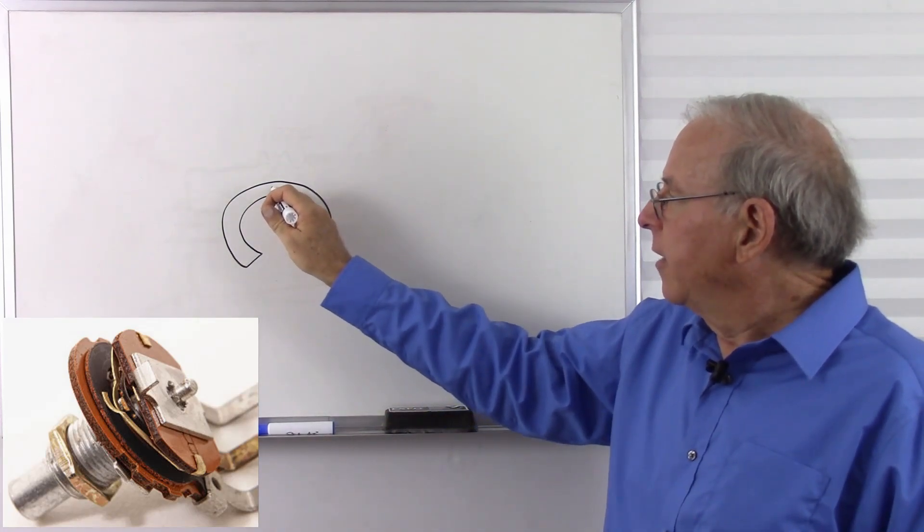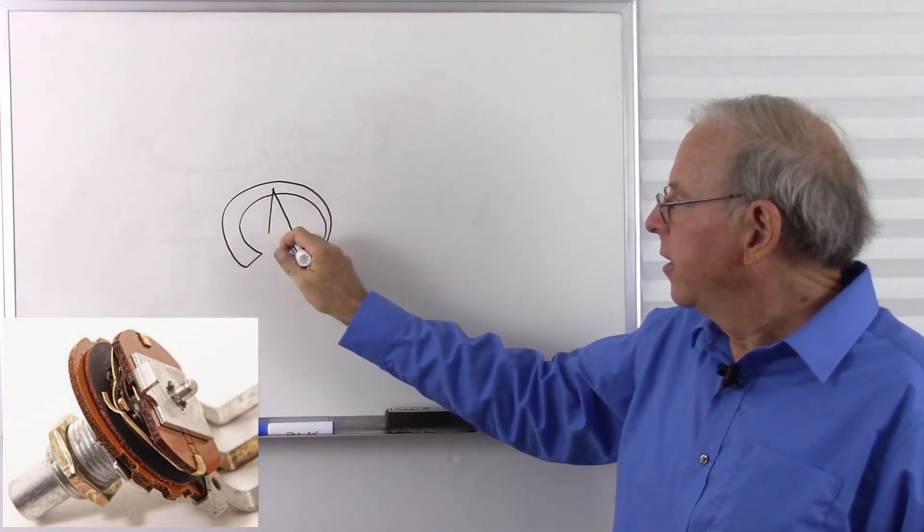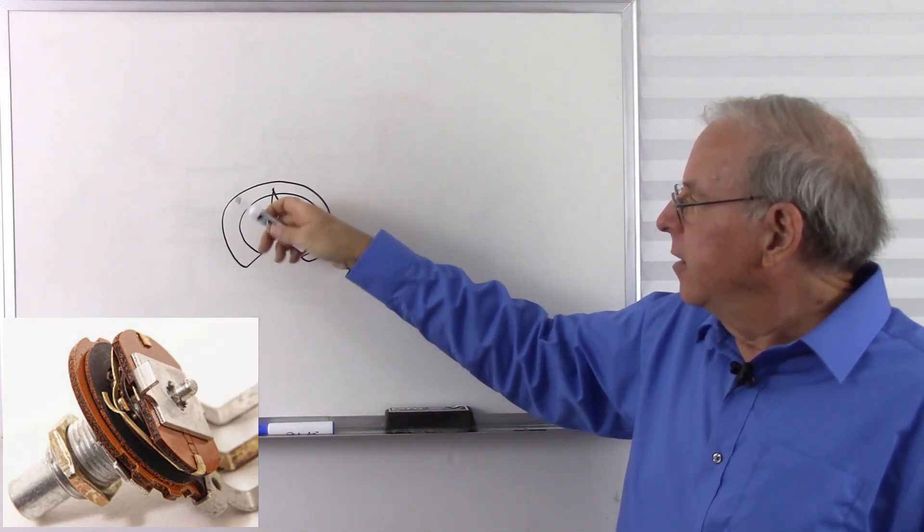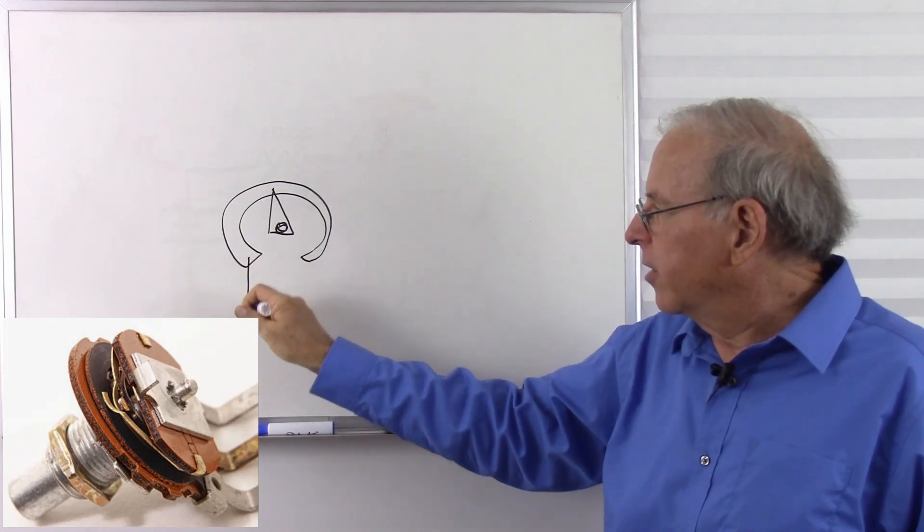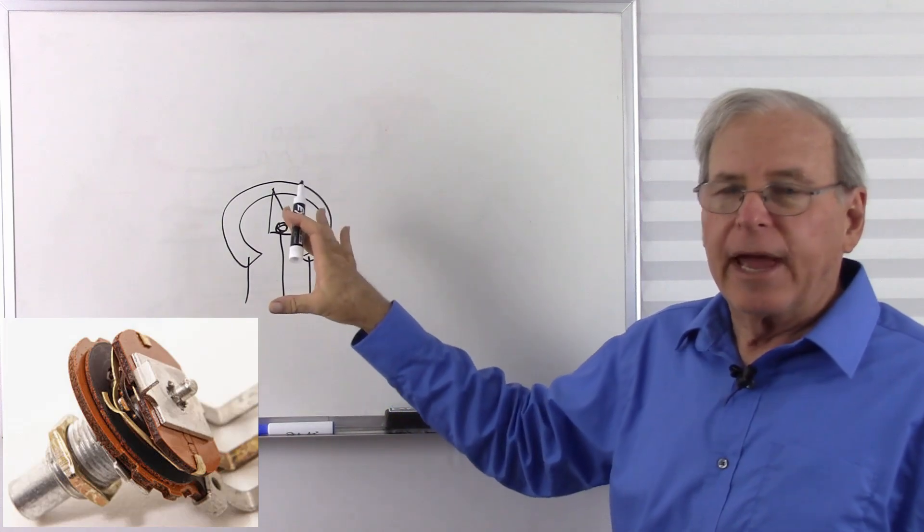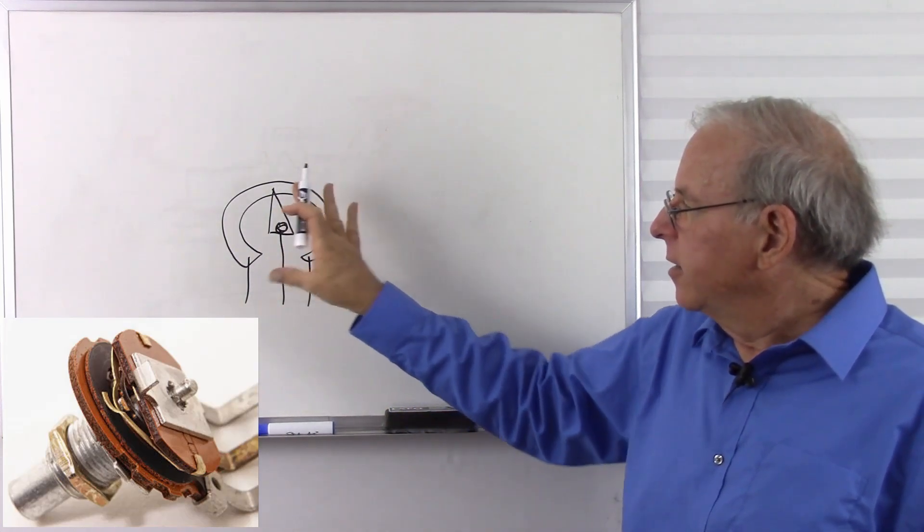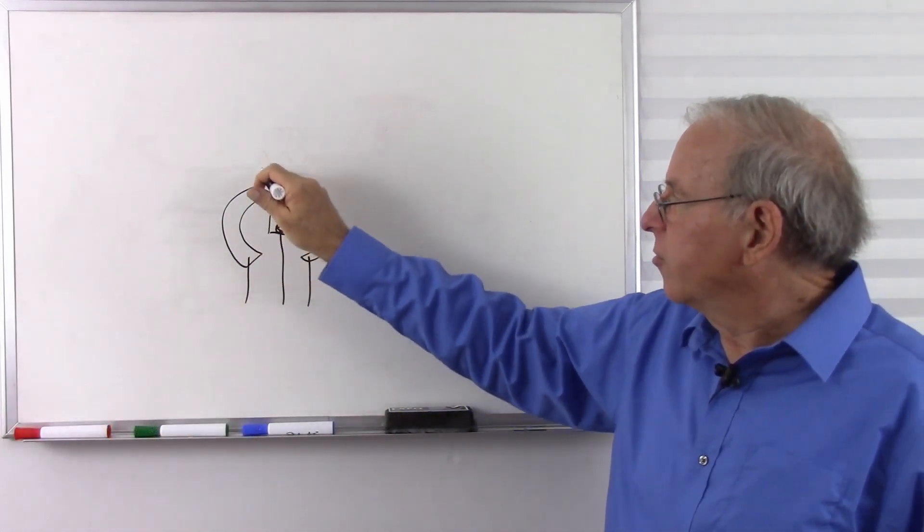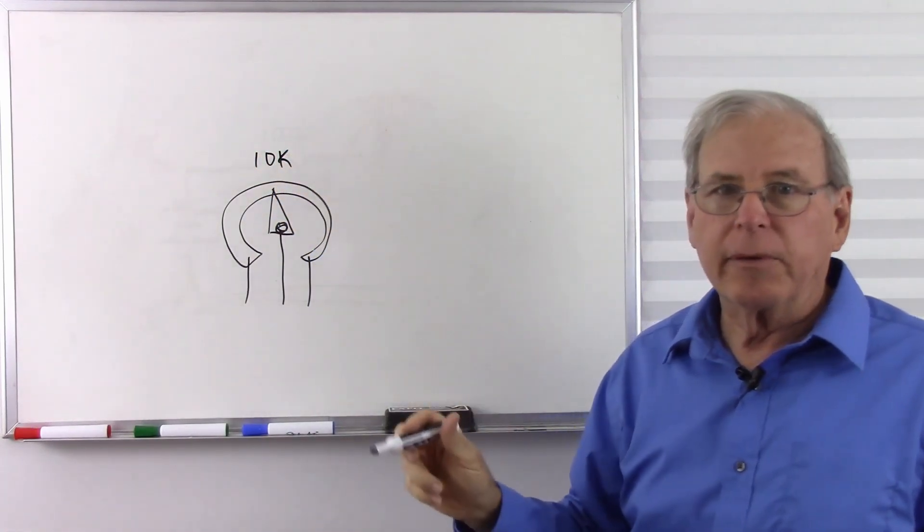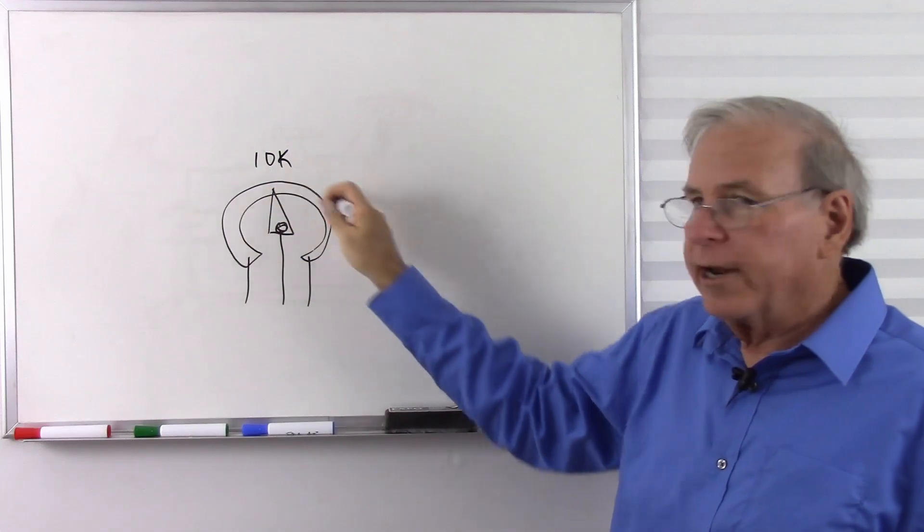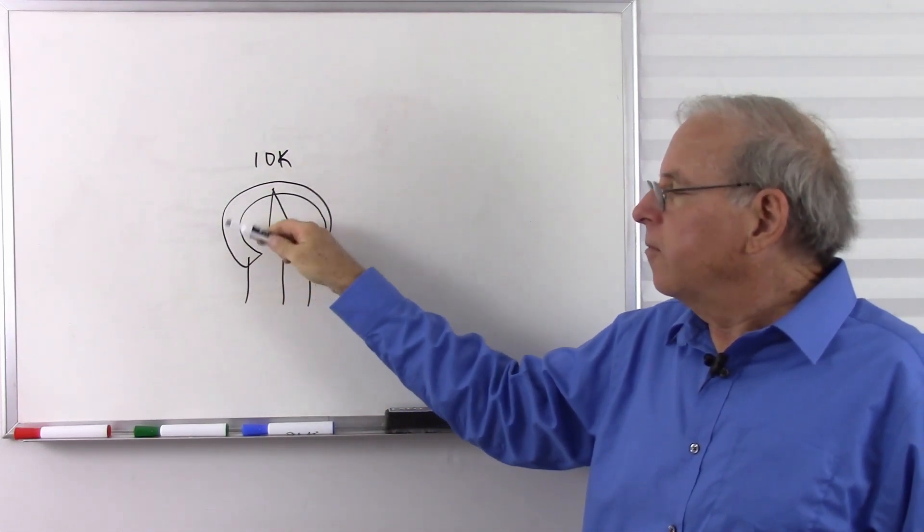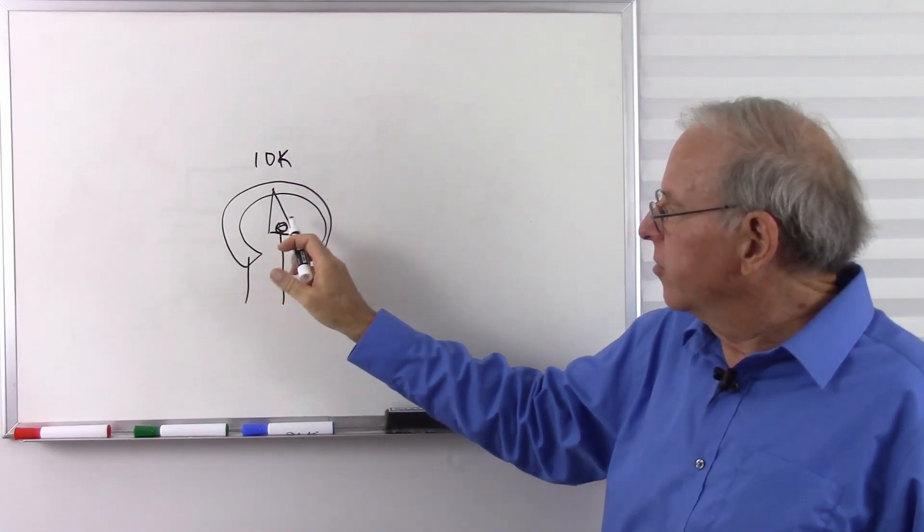But anyway, there's a wiper that is connected to a handle of some sort, a knob, and that can be taken across to where we have a connection on this end, a connection on that end, and another connection to the middle. And we have a carbon track variable resistor. So we have a certain amount of resistance. Let's say this one's 10k. So it'll be labeled by how much resistance we have from one end to the other. And then this wiper can be put anywhere to get a different amount of resistance.